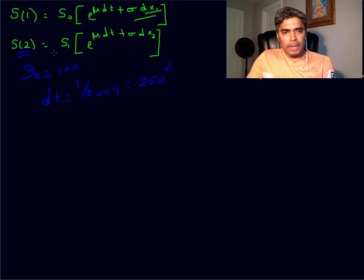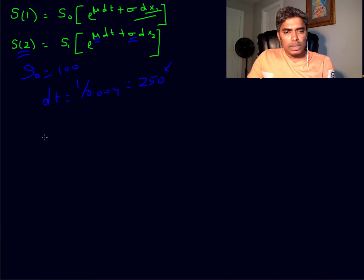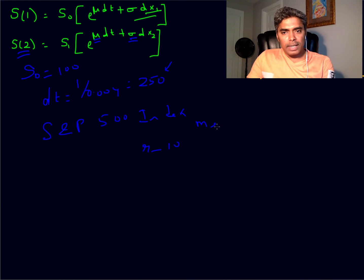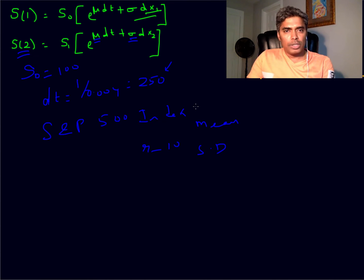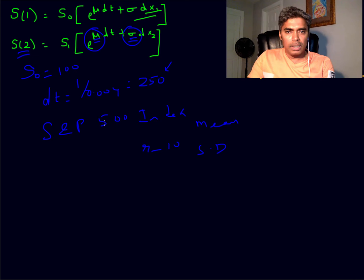So after almost two minutes, what is the value of the S&P index for the given day? To do that, I have to find mu and sigma. I'm going to take the S&P 500 index values for about nine to ten years, take the mean and standard deviation, express them as percentages, and use those in the equation. So mu and sigma will be fixed constants calculated from historical values.